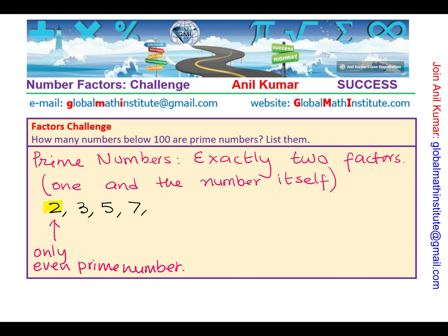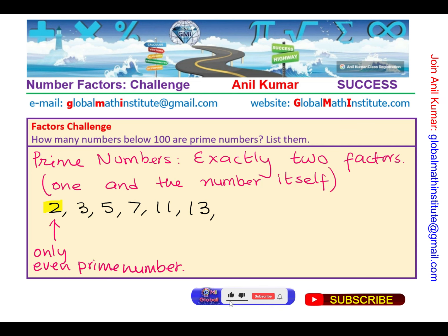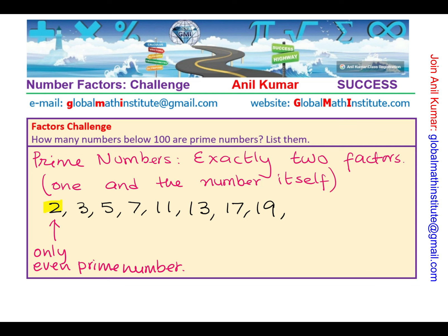Let's continue. 8 being an even number cannot be prime. 9: 3 times 3 is 9, so in addition to 1 and 9 we have 3 also. 10 is even. 11 is a prime number. We can skip even numbers. 13 is prime. 14 is even. 15: 5 times 3 is an additional factor. 16 is even. 17 is a prime number. 18 is even. 19 is a prime number. 20 is even. 21: 7 times 3 is 21, so it has more factors — 4 factors actually. 22 is even. 23 is a prime number. 24 is even.